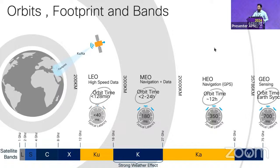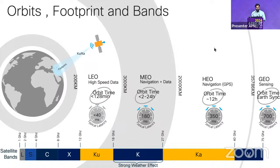Orbits are the paths that satellites follow when launched into space — a defined path based on the altitude at which the satellite is placed. The altitude defines the type of satellite. For LEO (low earth orbit), we're talking about a range of around 200 to 3,000 kilometers from the earth.